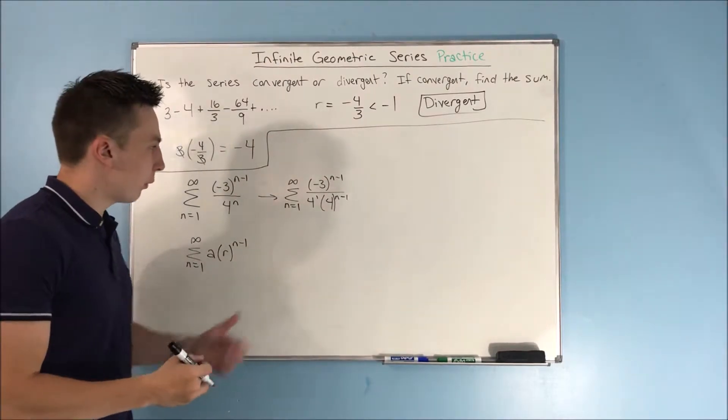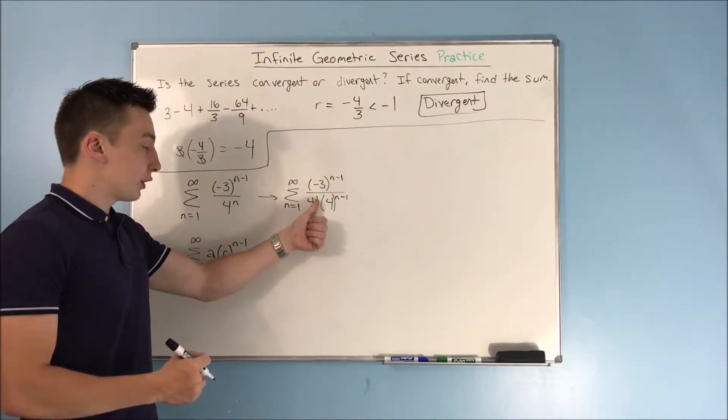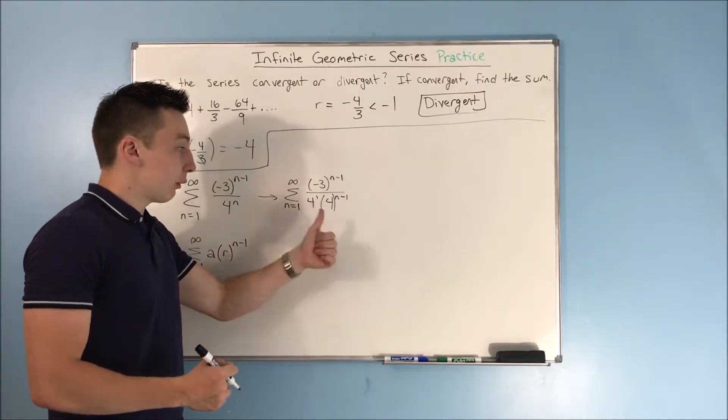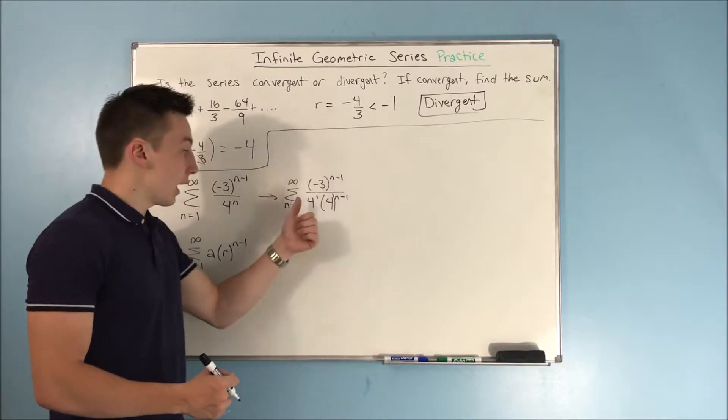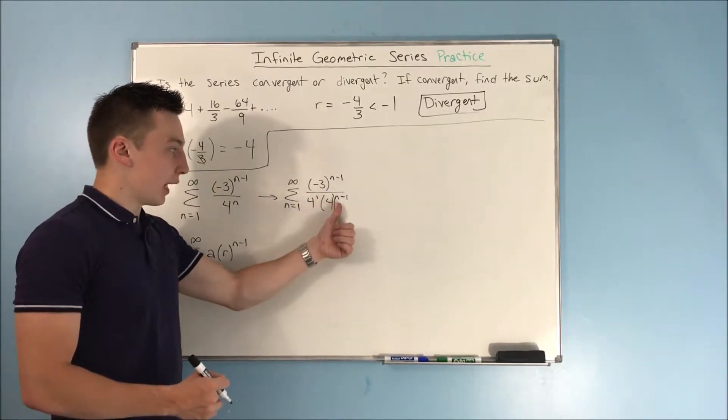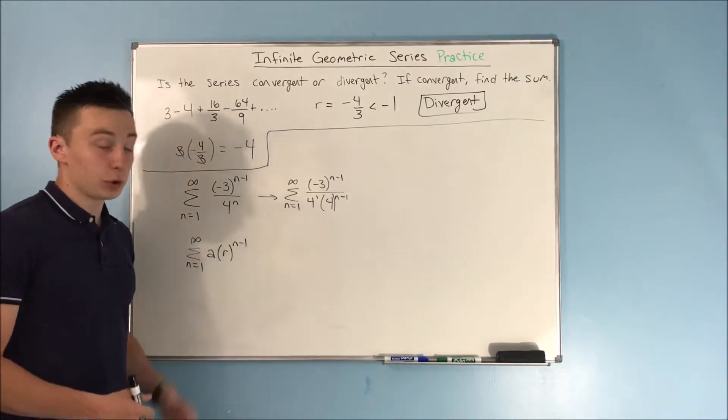Now, where is that coming from? Well, if you multiply this 4 to the 1st power times 4 to the n minus 1 power, you have to add the powers together. And 1 plus n minus 1 is going to be just n, so you get 4 to the n, which we had over here.